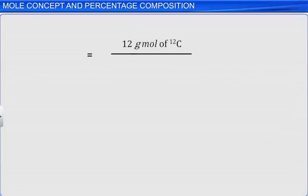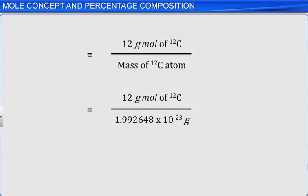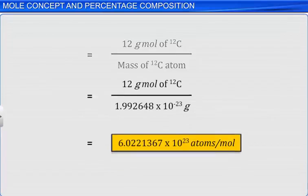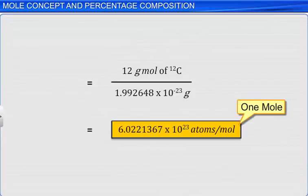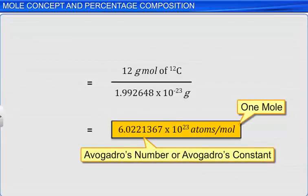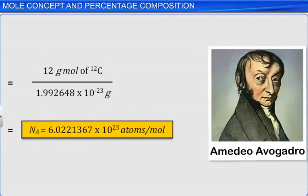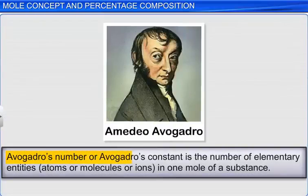They then divided 12 grams of carbon-12 by the mass of a carbon-12 atom and obtained 6.0221367 × 10²³, which is the number of atoms in one mole or 12 grams of carbon. This is the value of one mole and is known as Avogadro's number or Avogadro's constant, in honor of Amedeo Avogadro, and is usually represented as Nₐ. Avogadro's number is defined as the number of elementary entities — atoms, molecules, or ions — in one mole of a substance.